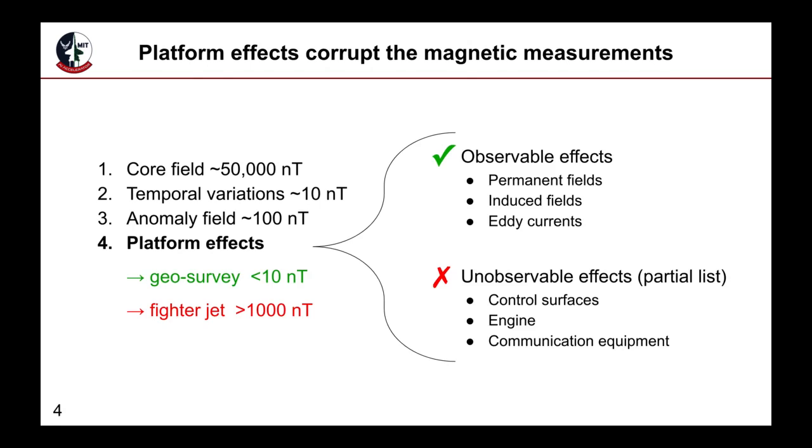These platform effects can vary in magnitude significantly depending on the type of aircraft and the measurement location on the aircraft. In the best case scenario, measurements are taken on a tail stinger of a geosurvey aircraft, which will be shown shortly. In this case, the platform effects are observable and can be calibrated out using the state-of-the-art model. The worst case scenario is measuring within an aircraft with significant magnetic noise. In this case, many of the platform effects are unobservable and cannot easily be calibrated out.